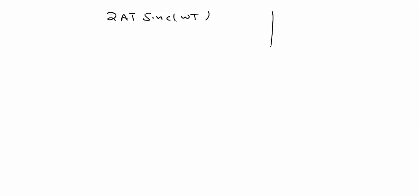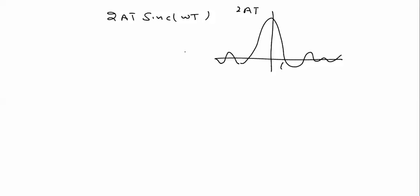We draw the sinc function 2AT·sinc(ΩT) in the frequency domain. The peak value is 2AT and the first zero crossing is at ΩT = nπ, so for the first zero crossing (n=1), Ω = π/T. Previously the bandwidth was 2π/T; now it is π/T — bandwidth is reduced by half by expanding the time domain signal. This is the fundamental relation between time domain and frequency domain scaling.